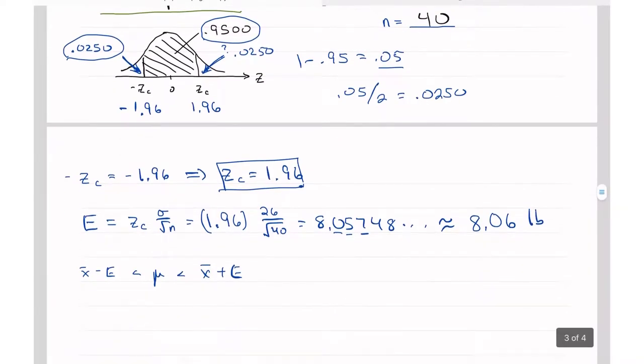Now I plug into my formula for the CI. That's this formula here. So x̄ was 172.55 minus E, which is 8.06. And I have μ, then I have 172.55 plus 8.06. And so 172.55 plus 8.06, we'll do the top one first over here. That's going to give me 180.61.